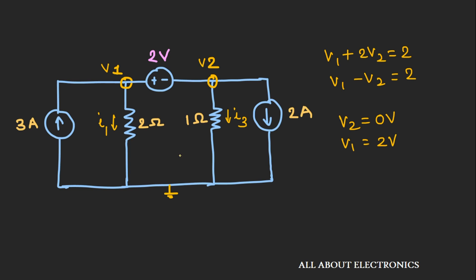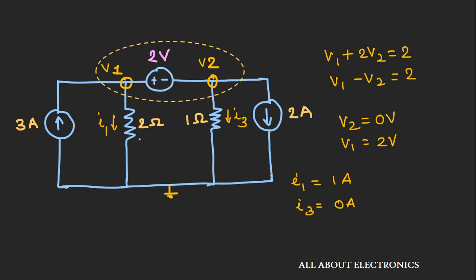Hence, current I1 is 1A and current I3 is 0A. The current entering the supernode is 2A and the current leaving is also 2A, so the current flowing through the 2V voltage source is 2A. In this way, using the concept of supernode, we can solve such problems.